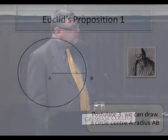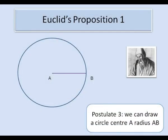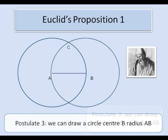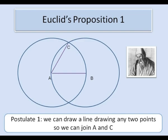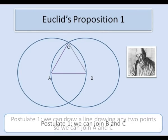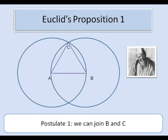So to prove proposition 1, we start with our given line AB. Using axiom 3, we can draw a circle with centre A and radius AB. Using the same axiom again, we can draw another circle with centre B and radius AB. These circles meet at C and by axiom 1, we can draw a line joining A to C because we can draw a line joining any two points. We can also draw the straight line BC, again by postulate 1.